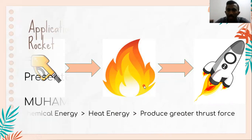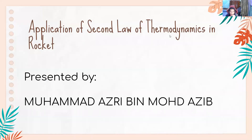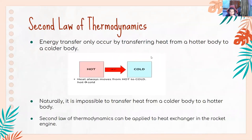Next, Azri will explain the application of the second law of thermodynamics in rocket. I am Muhammad Azri bin Muhammad Nasi. Energy transfer will only happen by transferring heat from a hotter body to a colder body in a natural process. It is impossible for a colder body to dissipate heat to a hotter surrounding. Therefore, for the reverse process, it requires special devices such as refrigerators and heat pumps to transfer heat from low temperature to high temperature.